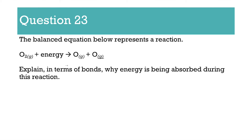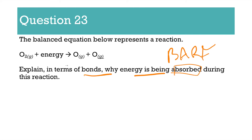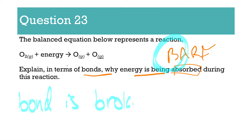Number 23: given the bond equation, explain in terms of bonds why energy is being absorbed. When talking about bonds and energy, you should be thinking BARF — Break, Absorb, Release, Form. It's telling you energy is being absorbed, so a bond is being broken — that is all you need. When energy is absorbed, that means a bond is being broken. When it comes to short answer questions, you don't need to write an essay, you don't need to restate — answer it in as few words as you can. It says 'in terms of bonds,' so that's why we need to talk about a bond.